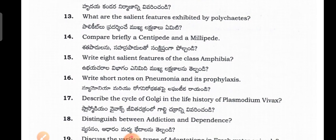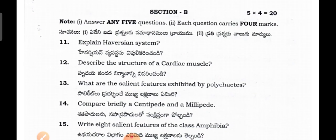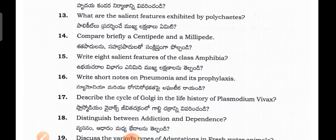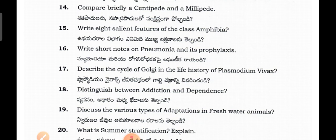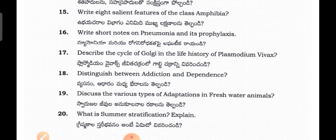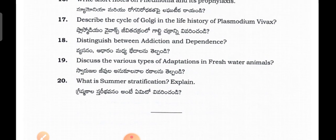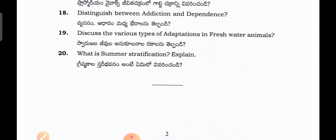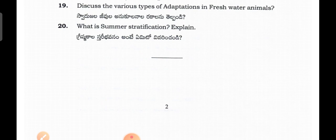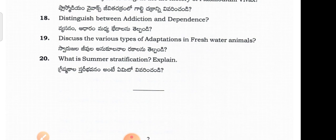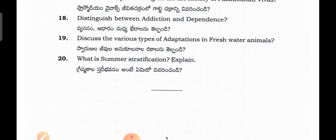Section B questions — answer any five, each carrying four marks. Explain the Haversian system. Describe the structure of cardiac muscle. What are the salient features exhibited by the polychaetes? Compare briefly centipede and millipede. Write eight salient features of class Amphibia. Write short notes on pneumonia and its prophylaxis. Describe the cycle of Golgi in the life history of Plasmodium vivax. Distinguish between addiction and dependency. Discuss the various types of adaptations in freshwater animals. What is summer stratification — explain.